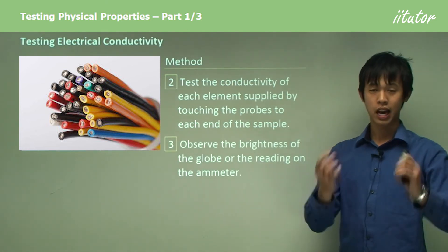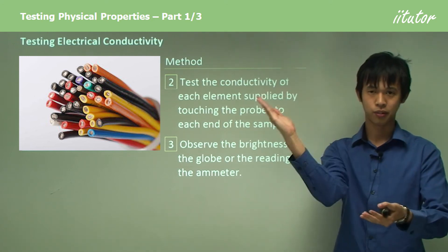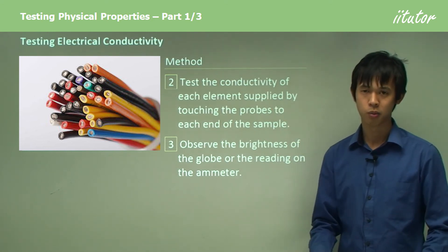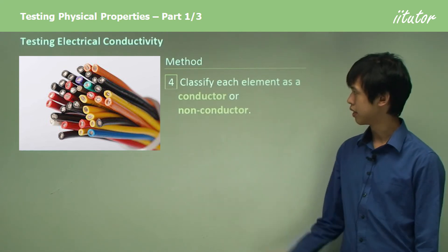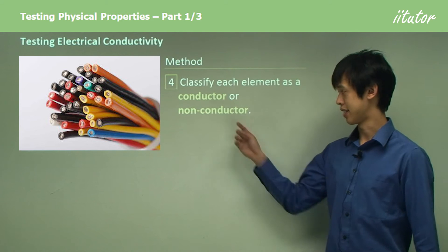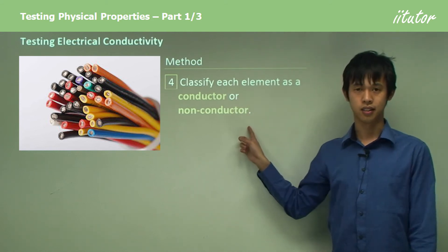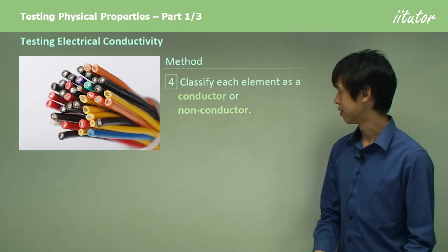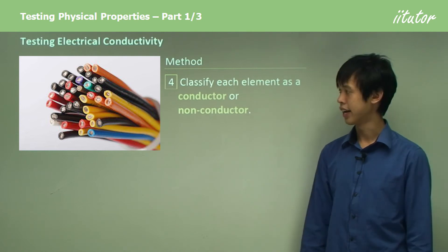Observe the brightness of the globe or the rating on the ammeter. The ammeter will give you a number or the needle will flick, or the globe will be a certain brightness. Then classify each of the elements as a conductor or non-conductor and tabulate your results.